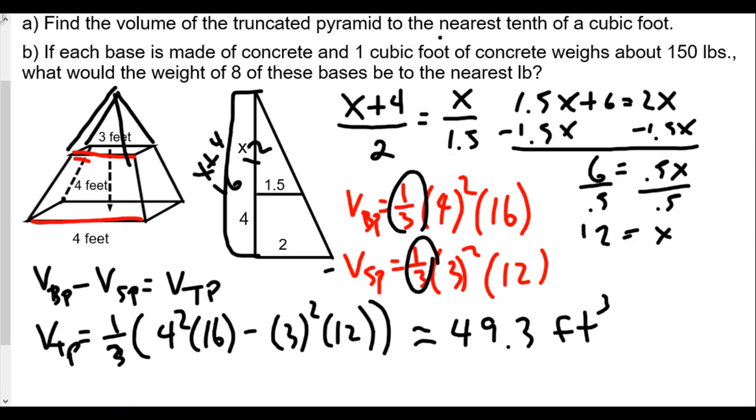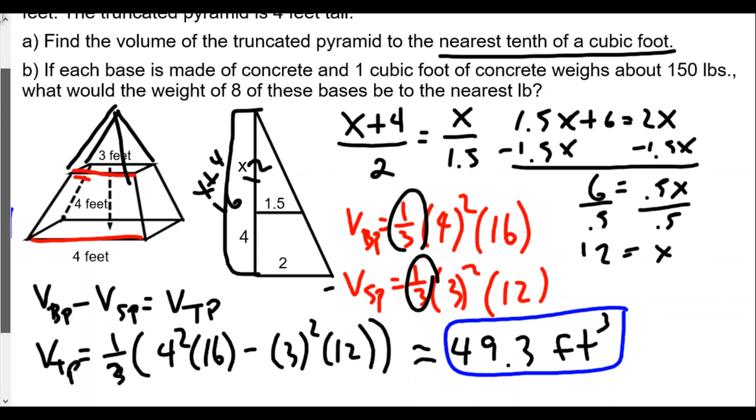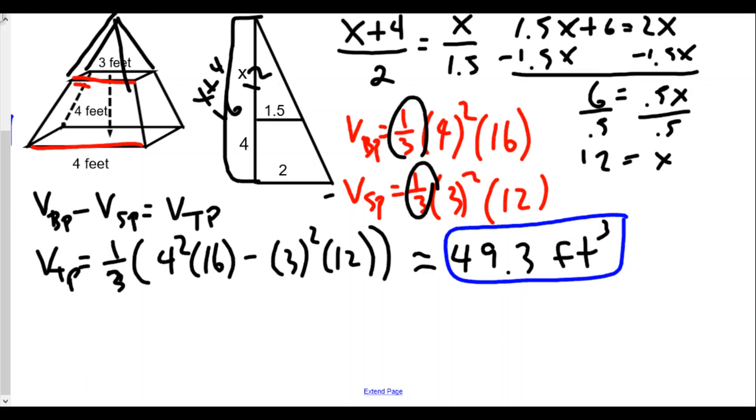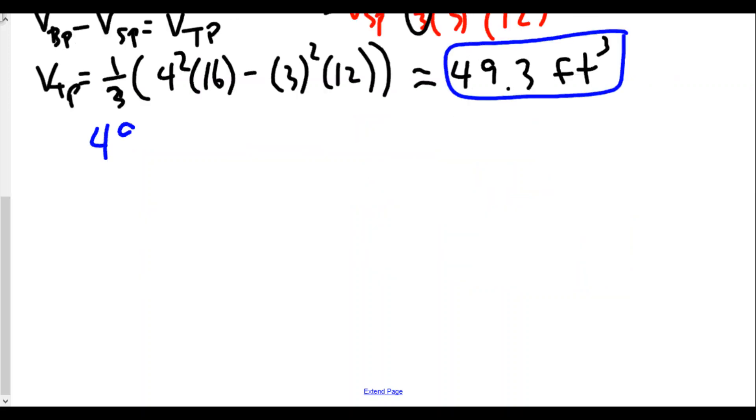So we got that first part, that's the volume of each of these bases. Now if each base is made of concrete and one cubic foot weighs about 150 pounds, we're going to multiply this by 150 and that'll be the weight of one of them, but we need to find the weight of eight of them. So we do 49.3 times 8 times 150 pounds.